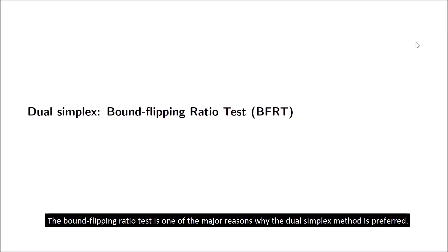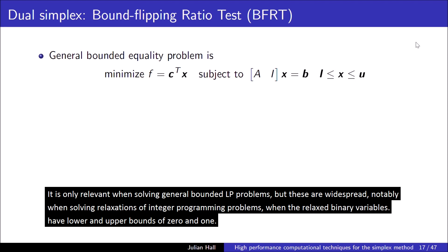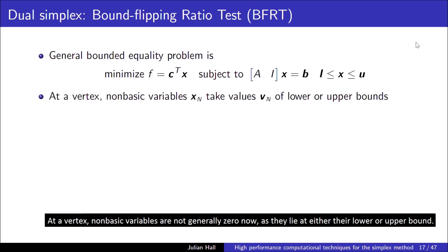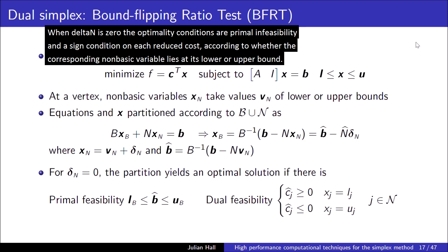The bound flipping ratio test is one of the major reasons why the dual simplex method is preferred. It's only relevant when solving general bounded LP problems, but these are widespread, notably when solving relaxations of integer programming problems, when the relaxed binary variables have lower and upper bounds of 0 and 1. One-sided and free variables are still accommodated by one or both of the bounds being infinite. At a vertex, non-basic variables are not generally 0 now, as they lie at either their lower or upper bound. Partitioning the equations as before yields an expression for the basic variables in terms of their values at the vertex and change, delta n, in the non-basic variables. When delta n is 0, the optimality conditions are primal feasibility and a sign condition on each reduced cost according to whether the corresponding non-basic variable lies at its lower or upper bound.